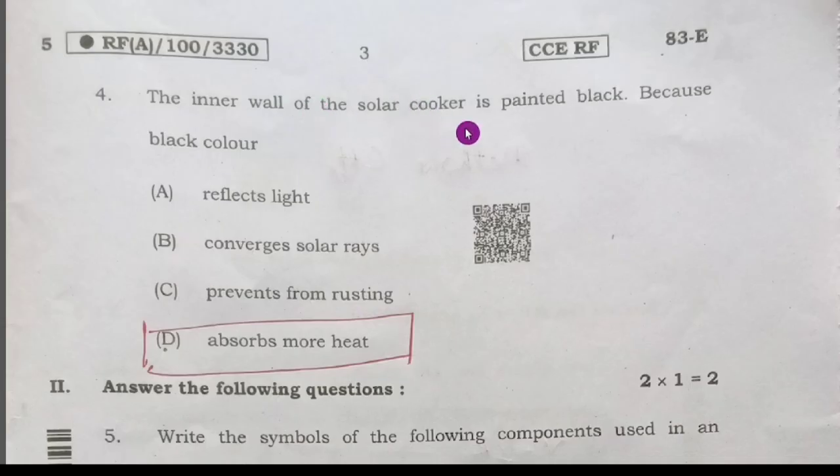Fourth question: the inner wall of the solar cooker is painted black because black color absorbs more heat. Option D is the right answer.